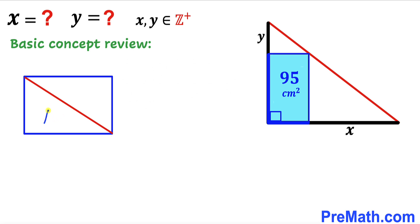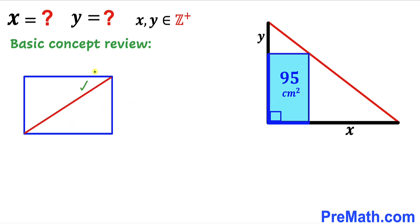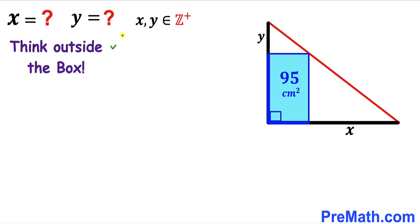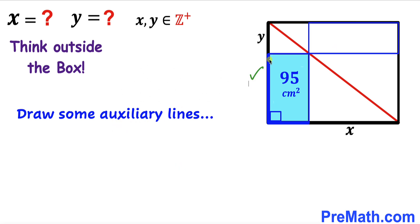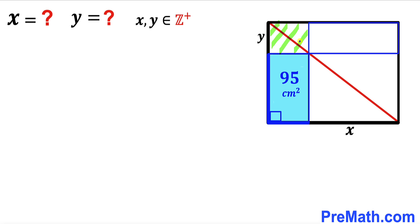If the area of the lower triangle is A, then the area of the upper triangle is also A, since both triangles are congruent. If we draw the diagonal the other way around, both resulting triangles still each have area A — equal areas. Now we're going to think outside the box and draw some auxiliary lines. I've drawn an auxiliary right triangle that is congruent to the given right triangle, and the diagonal of that rectangle also divides it into two equal parts.